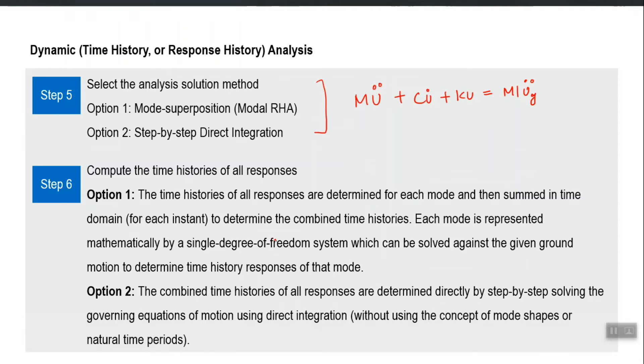In option one actually the time history of all the responses for each mode is calculated separately and it is assumed that each mode of a building is represented mathematically by a single degree of freedom system.